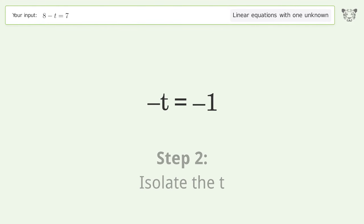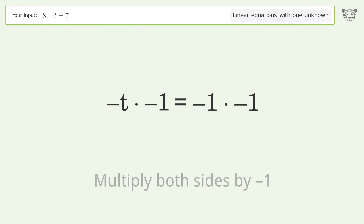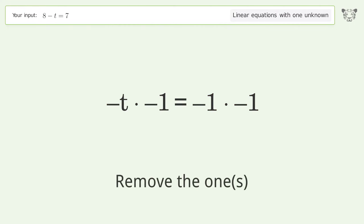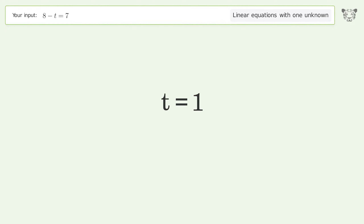Isolate the t — multiply both sides by negative one. Remove the ones. Simplify the arithmetic. And so the final result is t equals one.